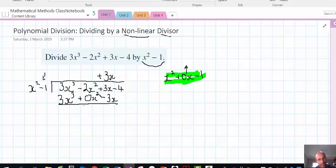So 0x squared is there as a placeholder essentially. And negative 1 times 3x is minus 3x. And we subtract through. We've got 0. Eliminates the cubic terms. Negative 2 take 0 is negative 2 x squared.